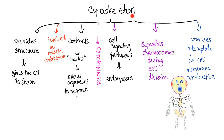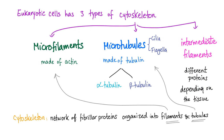The functions of the cytoskeleton are numerous: it provides structure for the cell, is involved in muscle contraction, forms tracks for organelles to move on, cytokinesis, cell signaling, chromosome segregation during cell division, and provides a template for cell membrane construction. There are three types of cytoskeleton: microfilaments, microtubules, and intermediate filaments.